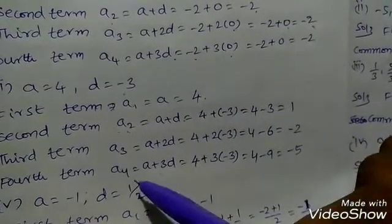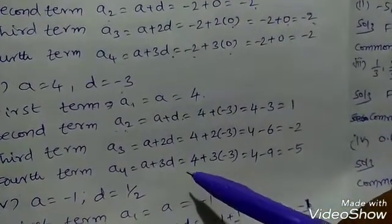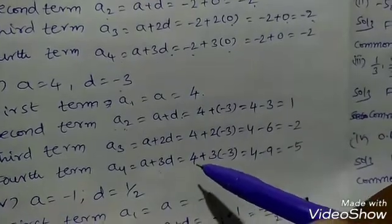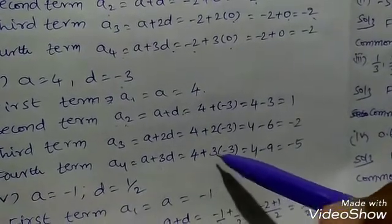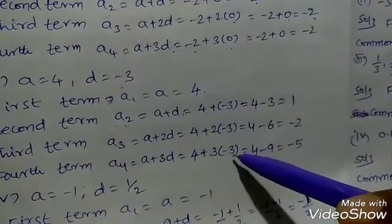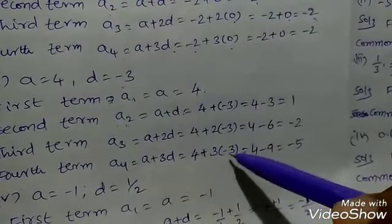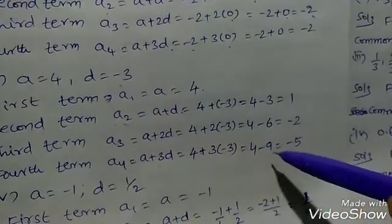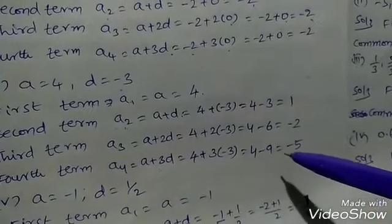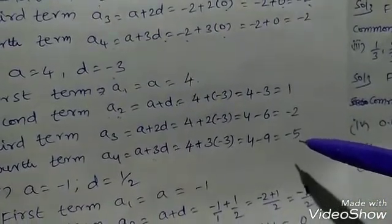Fourth term a4 equals a plus 3d, that is 4 plus 3 into minus 3. Plus into minus is minus, so 3 times 3 is 9. Therefore 4 minus 9 equals minus 5.